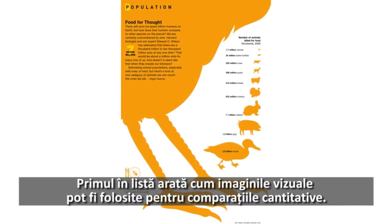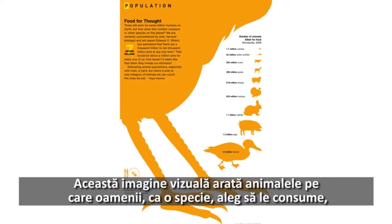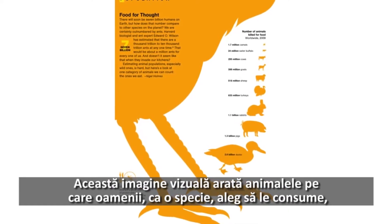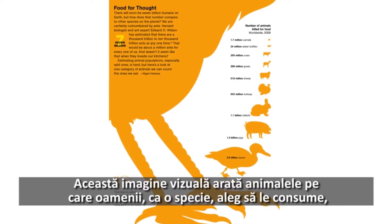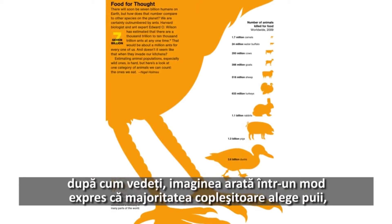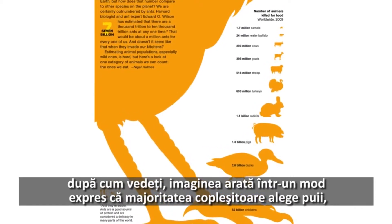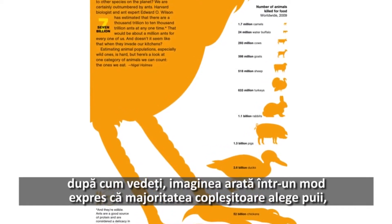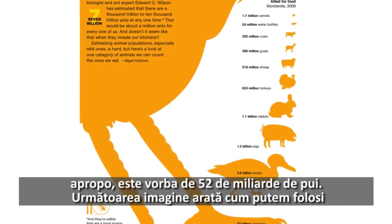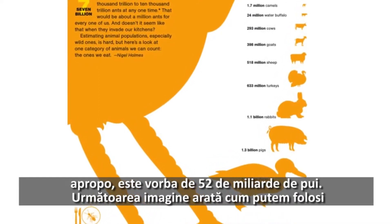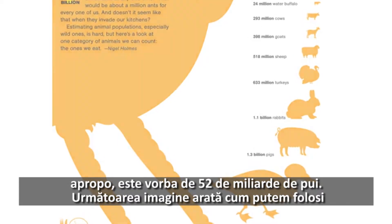First up is one that shows how visuals can be used in making quantitative comparisons. This visualization is about the animals that we as a species choose to eat. As you can see, chickens are our number one choice by a huge margin that this visualization shows in a very immediate way. That's 52 billion chickens, by the way.